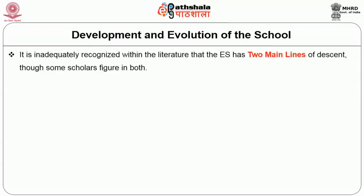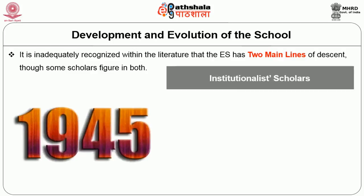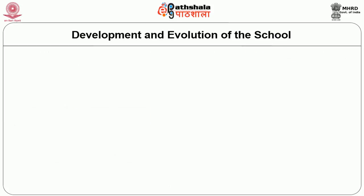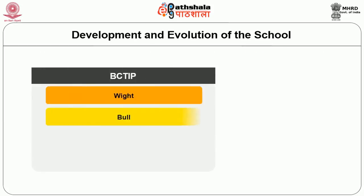This committee grew gradually and somehow gave tough competition to the American discipline or American supremacy in the field of international relations. It is inadequately recognized within the literature that the English school has two main lines of dissent, though some scholars figure it both. First, there is the set of early post-1945 institutionalist scholars from the London School of Economics, including Manning, Martin White, Bull, Alan James, and F.S. Northedge.